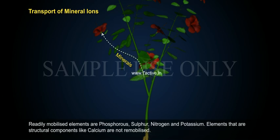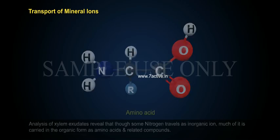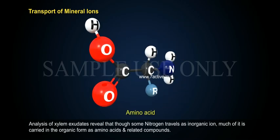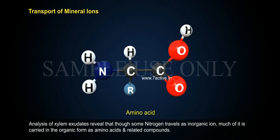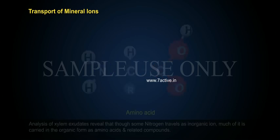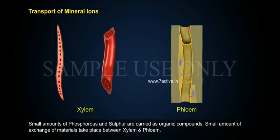Readily mobilized elements are phosphorus, sulfur, nitrogen, and potassium. Elements that have structural components, like calcium, are not remobilized. Analysis of xylem exudates reveals that though some nitrogen travels as inorganic ions, much of it is carried in organic form as amino acids and related compounds. Small amounts of phosphorus and sulfur are also carried as organic compounds.